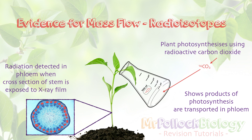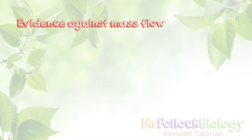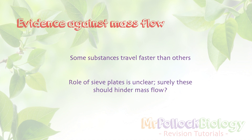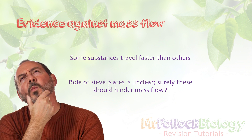There are some arguments against mass flow. Bizarrely, some substances will travel faster than others regardless of concentration gradients, and we just don't know why. The other issue is those sieve plates — the structures dividing the sieve tube elements. We know there are gaps to allow movement through the interconnected cytoplasm, but why are the plates even there? Surely that would slow down and hinder mass flow, which doesn't make sense. There are a couple of things there to ponder.